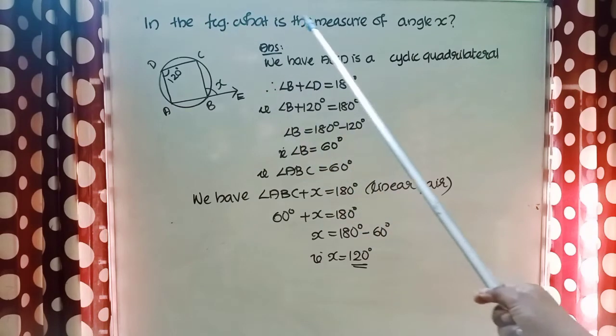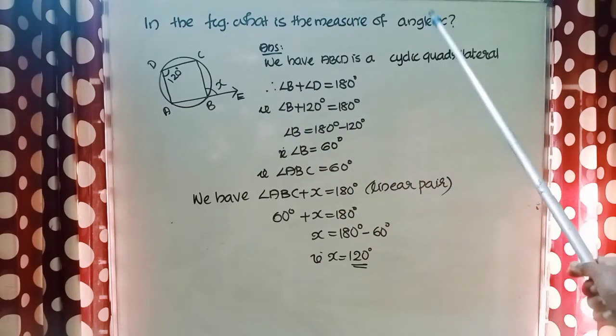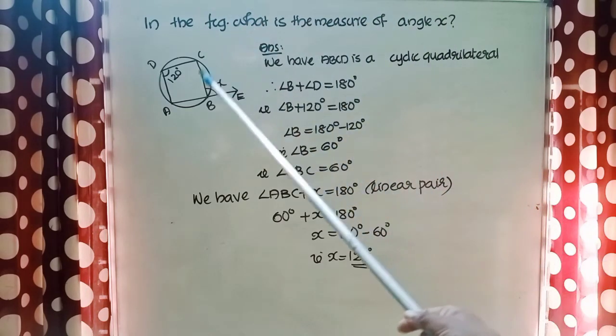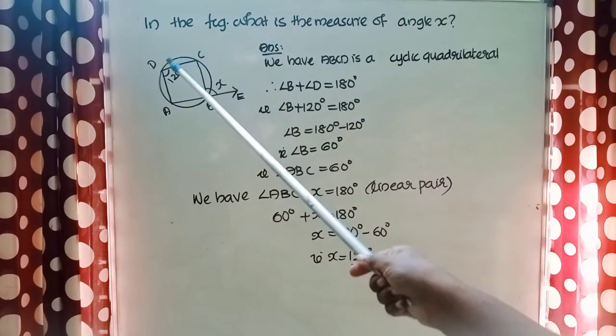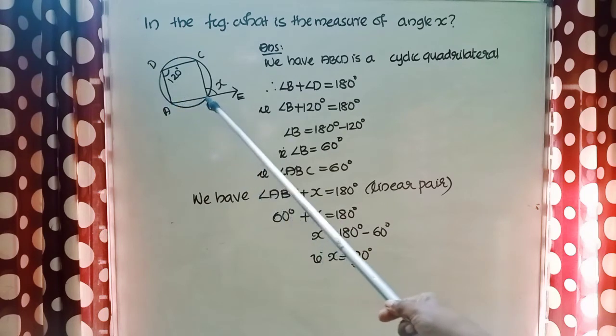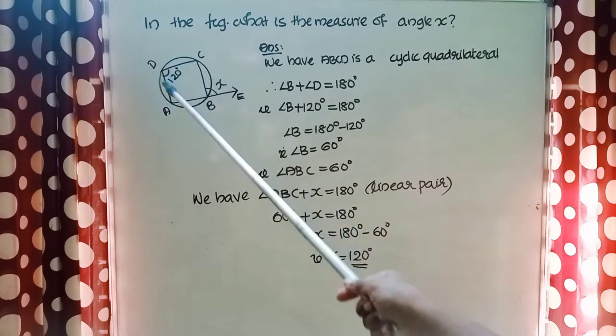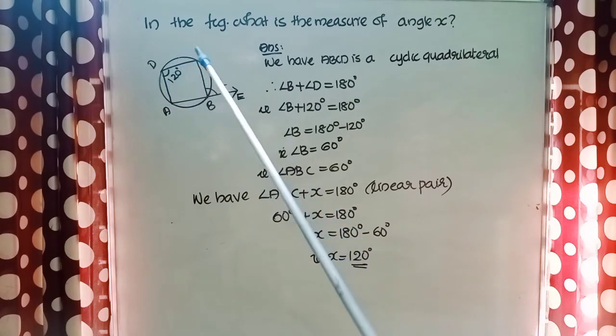In the figure, what is the measure of angle X? Here is the given figure. You can see that ABCD is a cyclic quadrilateral.